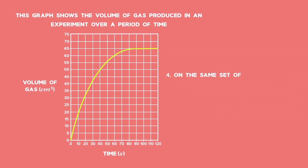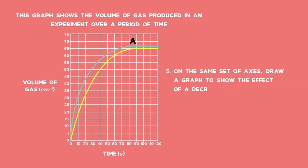On the same set of axes, draw a graph to show the effect of a catalyst added. Label it A. On the same set of axes, draw a graph to show the effect of a decrease in temperature. Label it B.